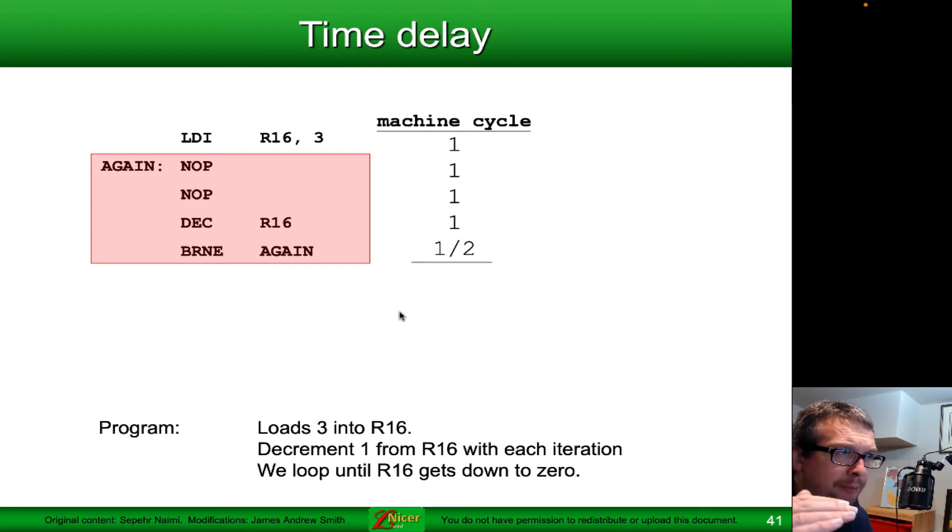We've done one cycle for loading. Next, we're going to do the nop, which is one cycle, the nop, which is one cycle, the decrement, which is one cycle. Then we do the branch, if not equal. We branch back because the decrement hasn't brought R16 down to zero yet. So that adds a two penalty.